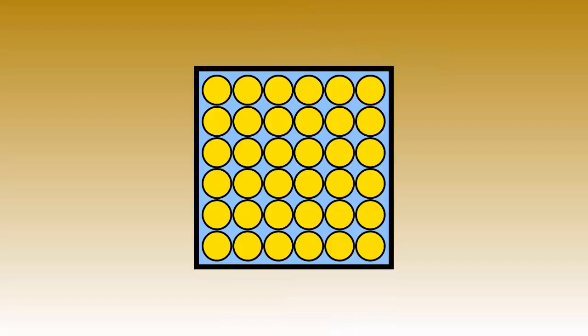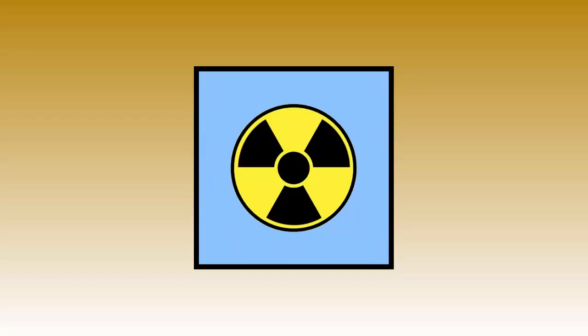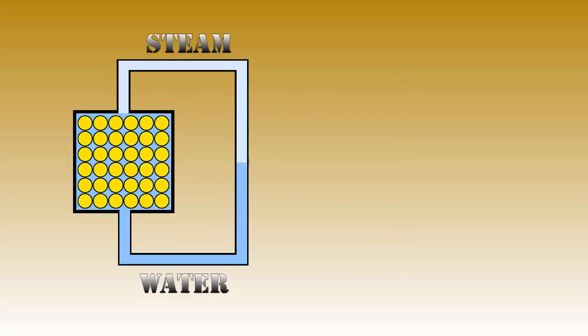The water around the uranium absorbs the neutrons, which are released by the fission reaction going on in the uranium, making the water radioactive. To prevent this radioactive water from getting out into the open, we want to close the system. That way, the radioactive water stays inside the system at all times and there is no radiation getting out.